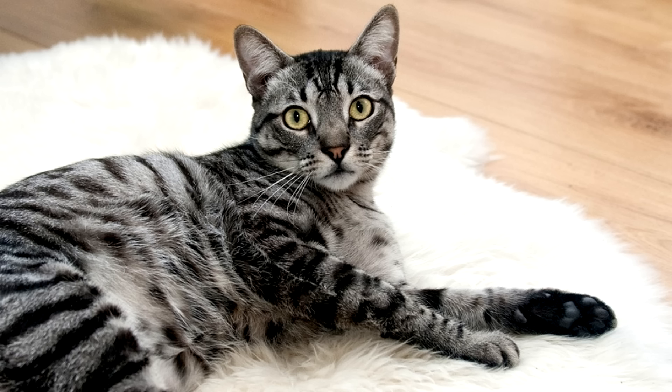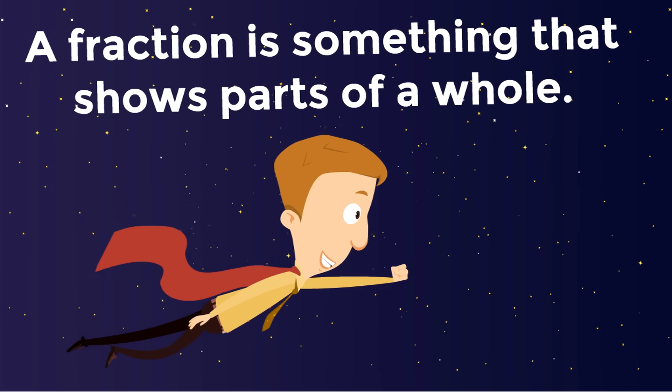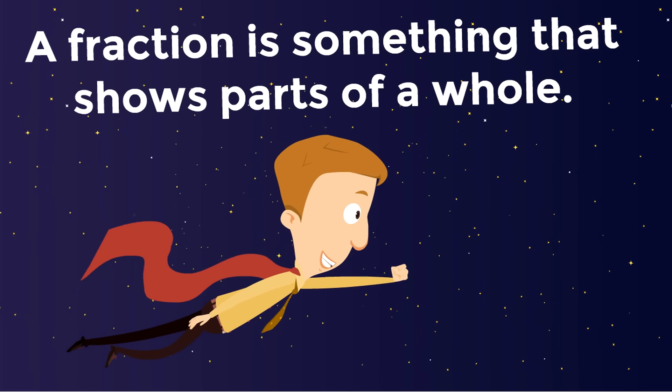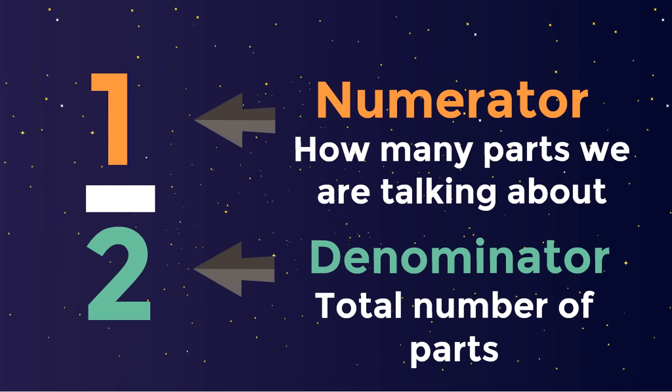A fraction is something that shows parts of a whole. The top number of a fraction is the numerator, how many parts we are talking about. And the bottom number of a fraction is the denominator, the total number of parts.